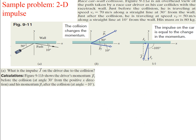Let's do an example problem. A race car is going to slam into a wall — this is a race car-wall collision. The figure is an overhead view of the path taken by the race car driver as the car collides with the racetrack wall. Just before the collision he's traveling at 70 meters per second along a straight line at 30 degrees from the wall. Just after the collision he's traveling at 50 meters per second along a straight line at 10 degrees from the wall. His mass is 80 kilograms. What is the impulse J on the driver during this collision?